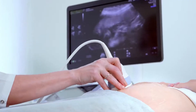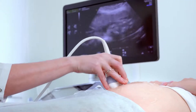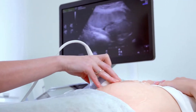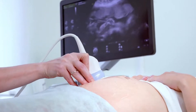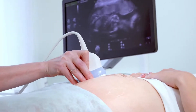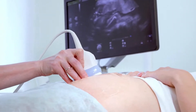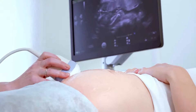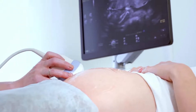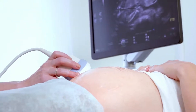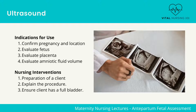Evaluating the placenta, such as its location — for example, the placement of the placenta could indicate previa or abruptio. Also evaluating amniotic fluid volume. During an ultrasound, the main nursing interventions are to prepare the client by explaining the procedure and ensuring the client has a full bladder.